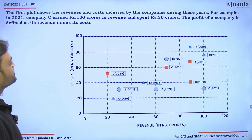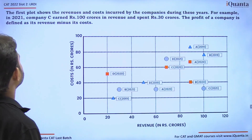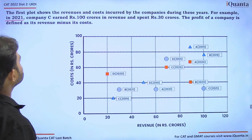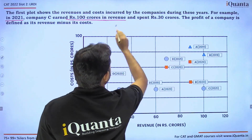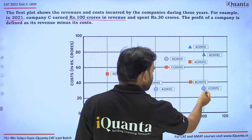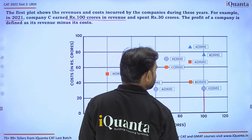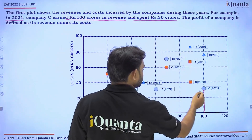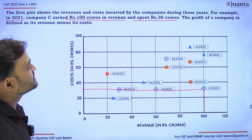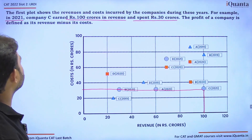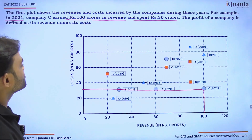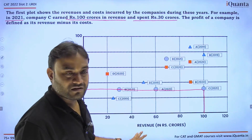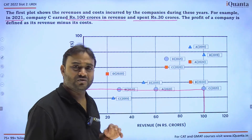Let's understand how to read the first and second plots. In 2021, company C earned 100 crores in revenue and spent 30 crores — that is the cost. The profit of a company is defined as its revenue minus its cost, which is the basic term. This is all the information given on how to read this data.